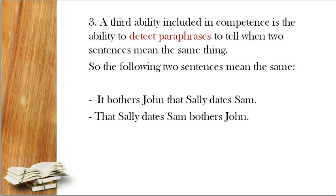A third ability included in competence is the ability to detect paraphrases — to tell when two sentences mean the same thing. قدرة ثالثة للمتكلم باللغة الأصلية هي قدرته على بيان إعادة صياغة الجملة. مثال — the following two sentences mean the same: 'It bothers John that Sally dates Sam.' / 'That Sally dates Sam bothers John.' نفس المعنى ولكن هناك إعادة صياغة، تقديم وتأخير في الجملة.